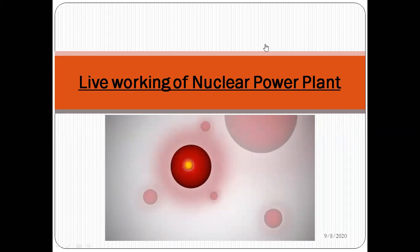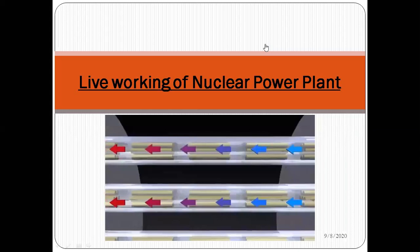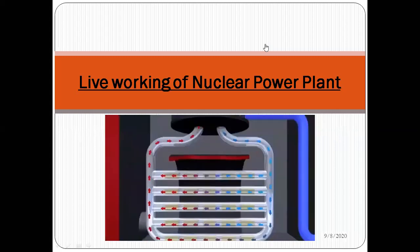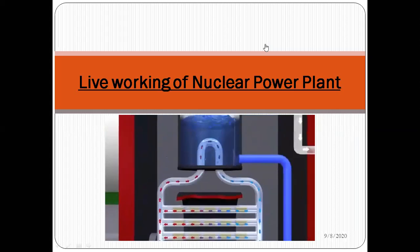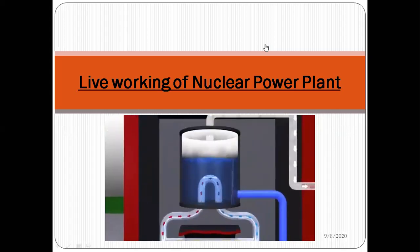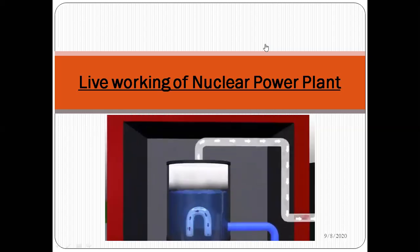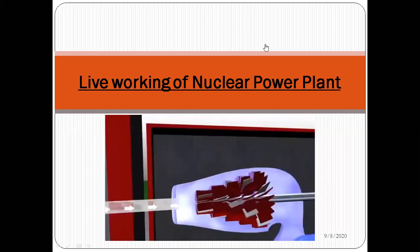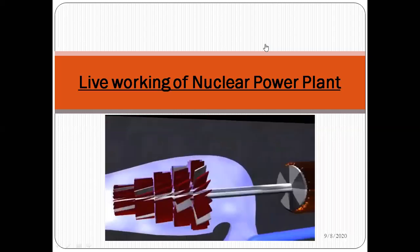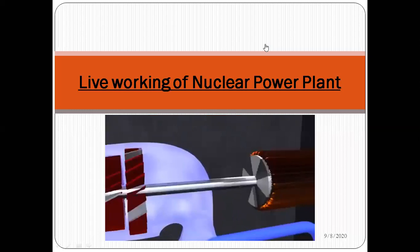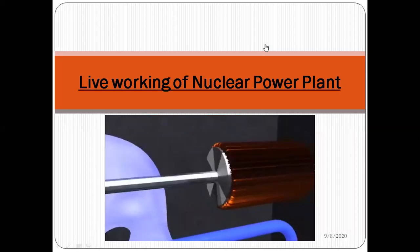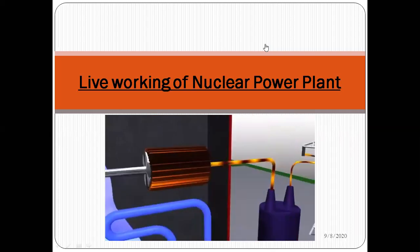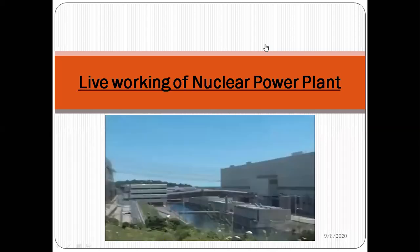The heavy water slows down neutrons so they are more likely to hit and split uranium atoms. A chain reaction of splitting atoms releases tremendous heat into the heavy water. The heated heavy water flows through a closed loop system pumped through the reactor to steam generators, where it transfers heat to ordinary water. When that water boils it turns into steam, which is transported at high pressure through pipes to a large turbine, pushing the blades and turning a shaft connected to a rotor in the generator, causing it to spin and produce electricity that is fed into transmission lines.